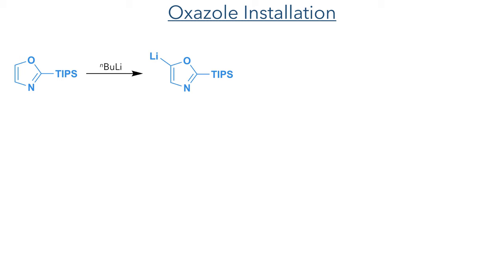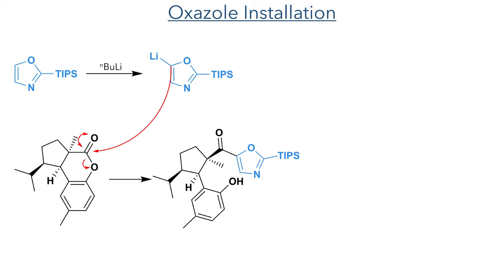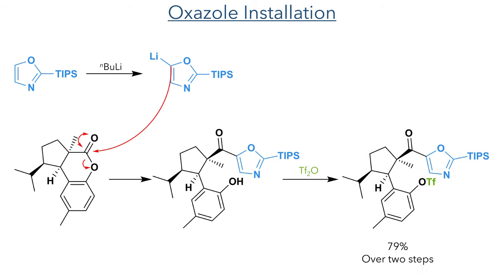The researchers then turned to installing the oxazole group. They first carried out a C-H functionalisation on a TIPS-protected oxazole, this time using n-BuLi. This forms a nucleophilic organolithium species that undergoes a 1,2-addition into the ester group to break open the lactone ring and reform the phenol. This phenol was then triflated using triflic anhydride with a yield of 79% over two steps.